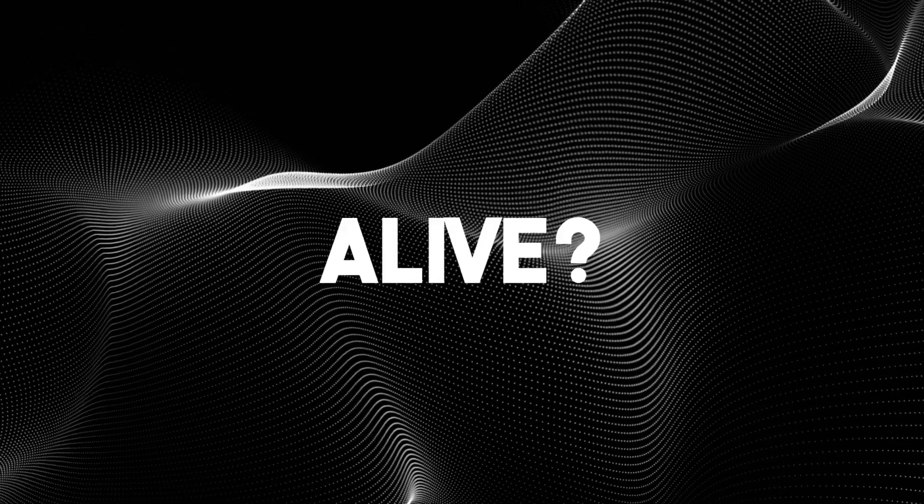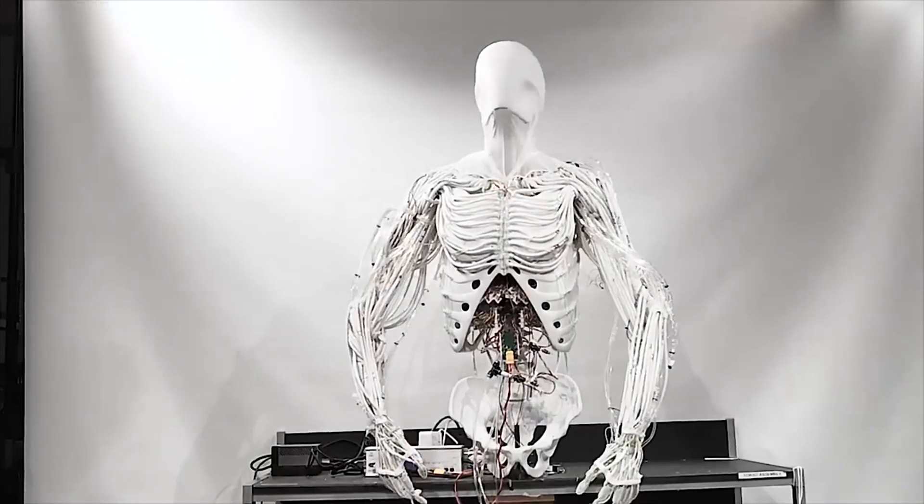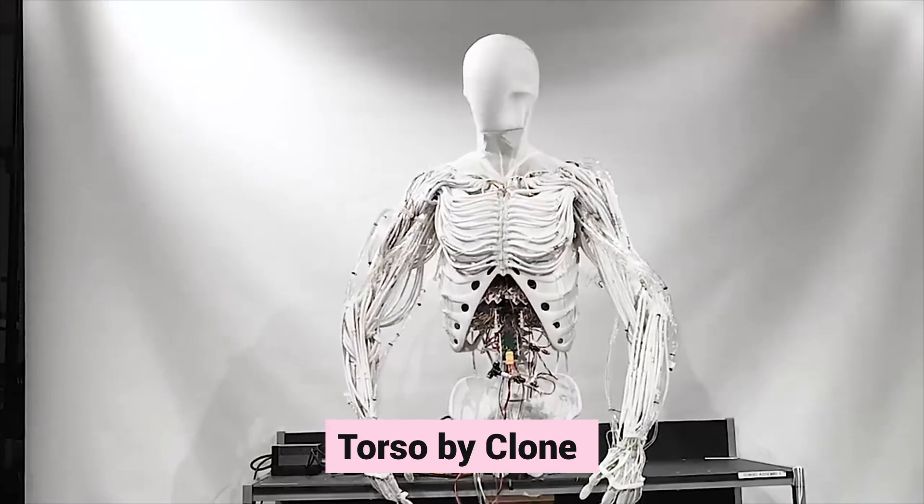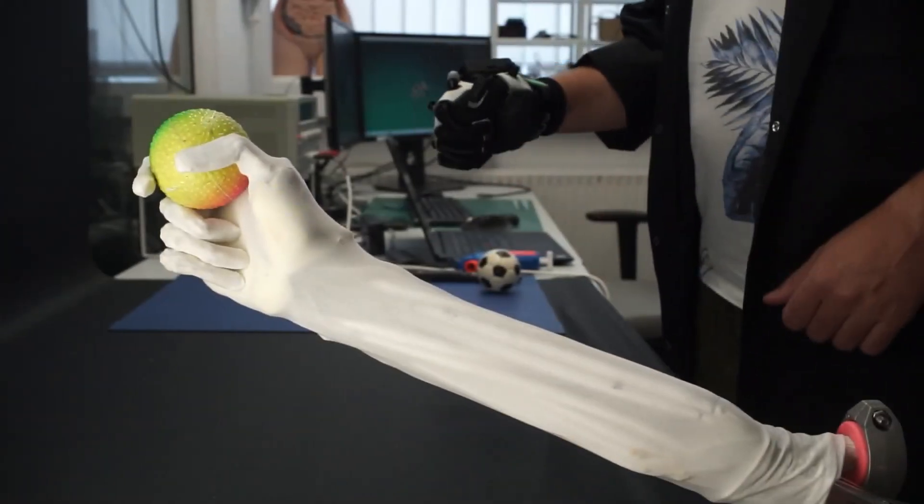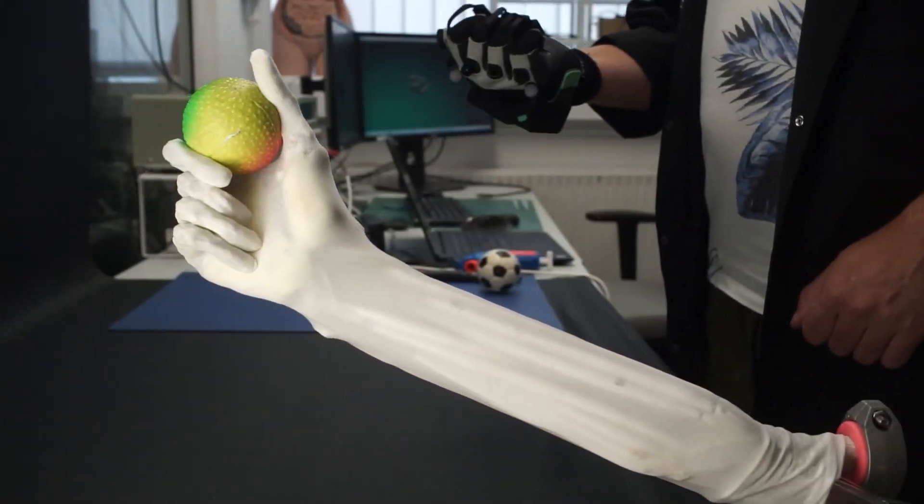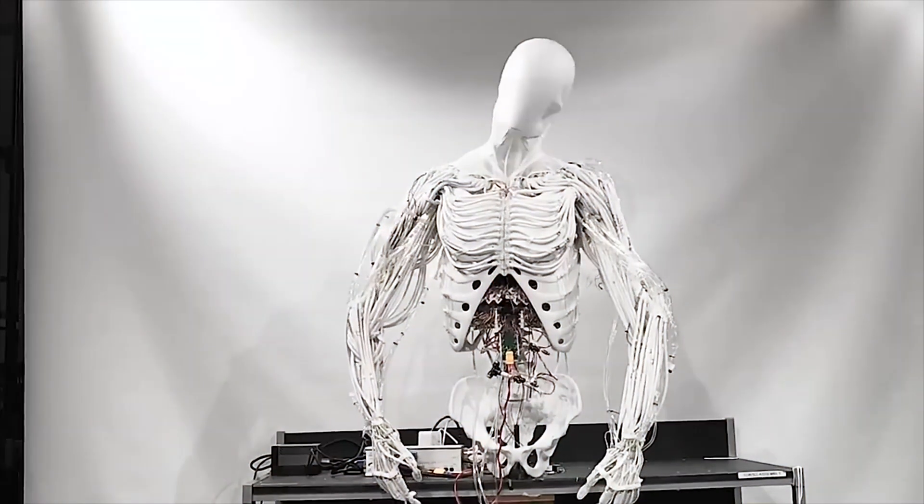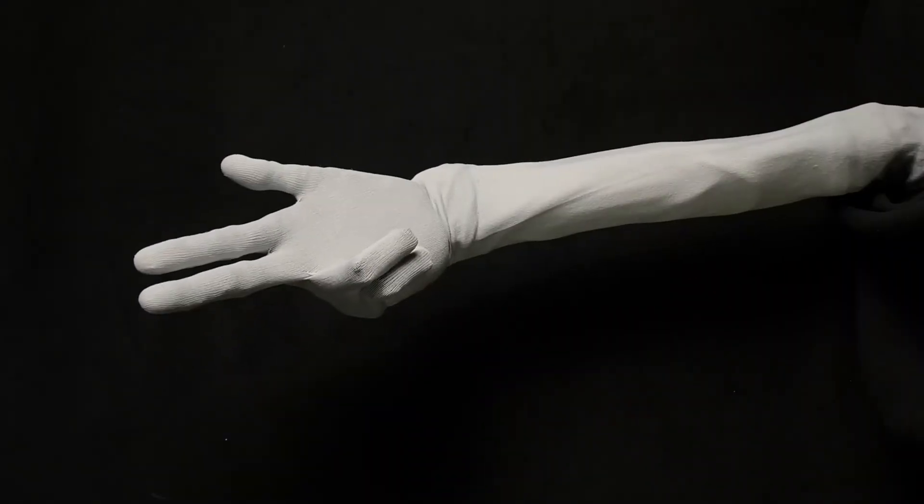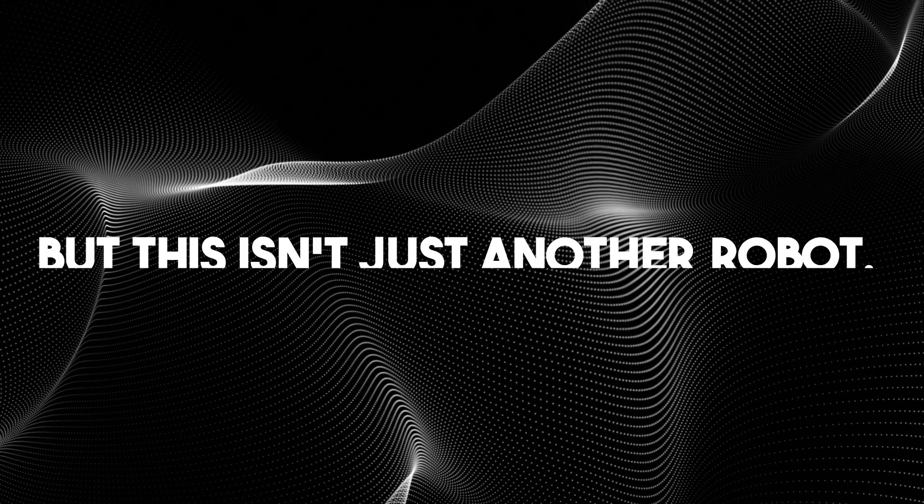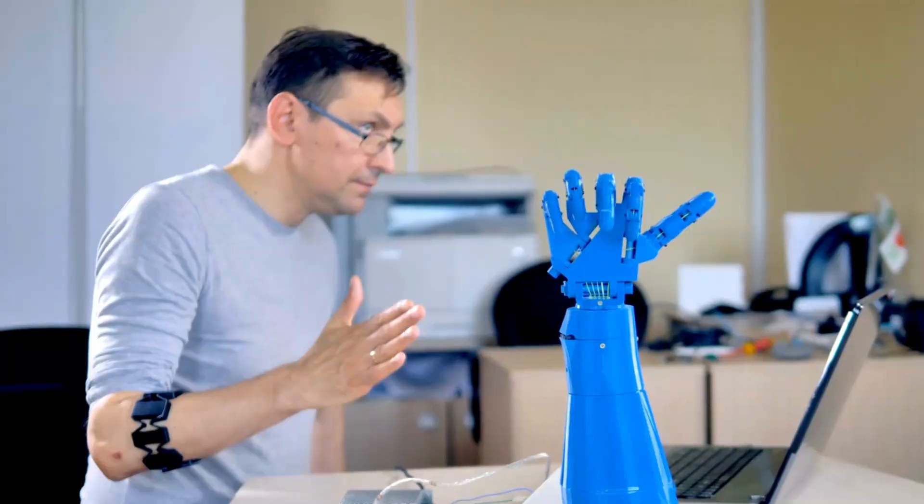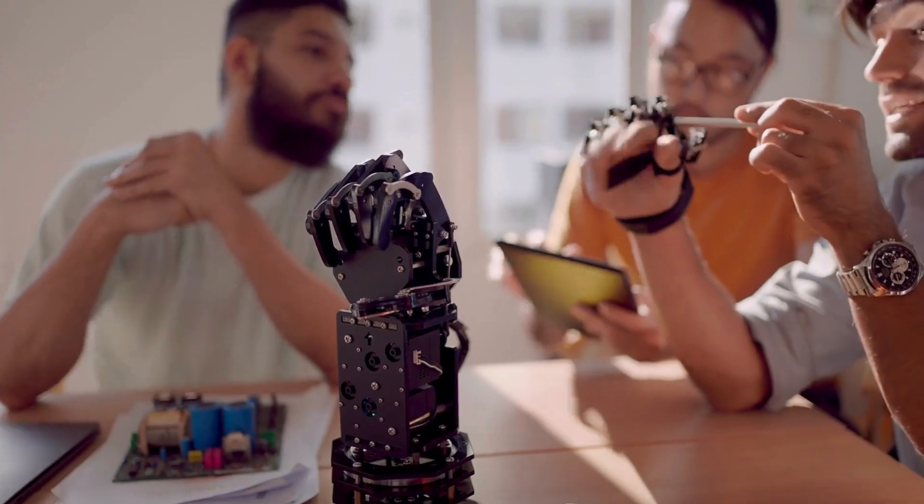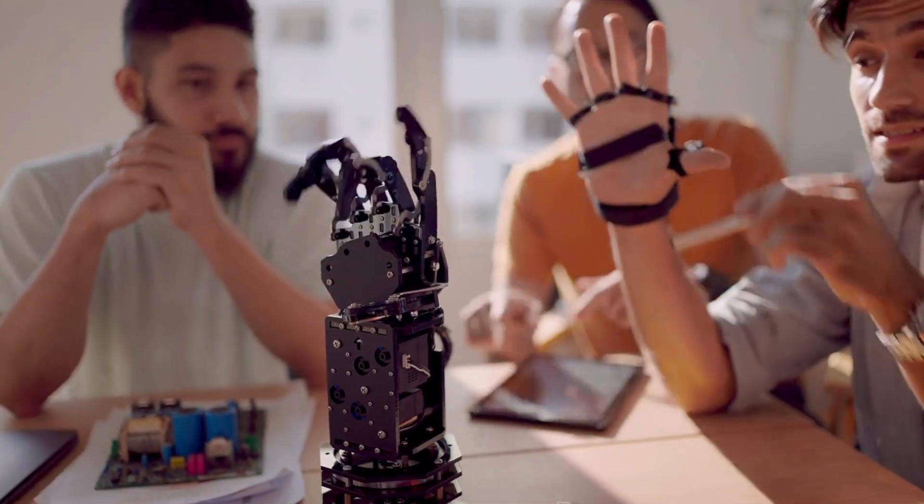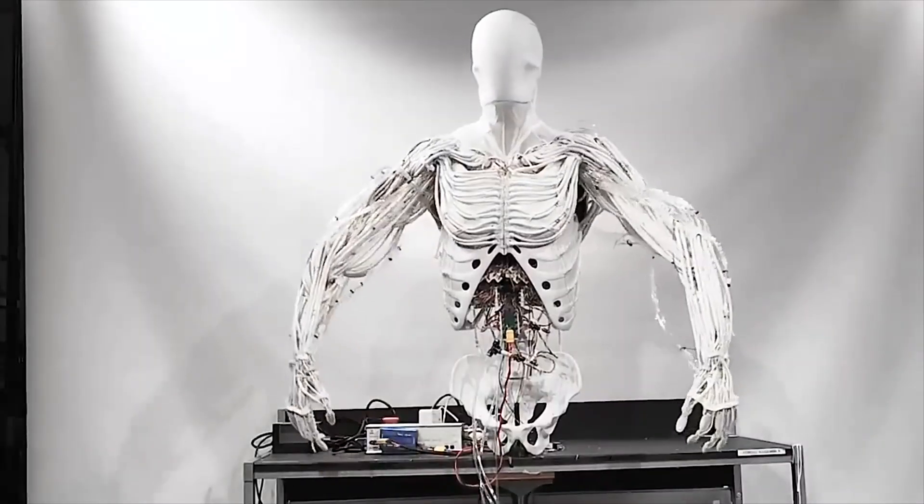Is it alive? That's the question people keep asking when they first see the Torso by Clone in action. Those fluid movements, that natural flex of artificial muscles, the way it reaches and grasps with almost human precision—it's enough to make you forget you're watching a machine. But this isn't just another robot. This is what happens when eight years of robotics research meets the ambition to recreate human movement in mechanical form. And the result? Well, it's both fascinating and just a little bit unsettling.